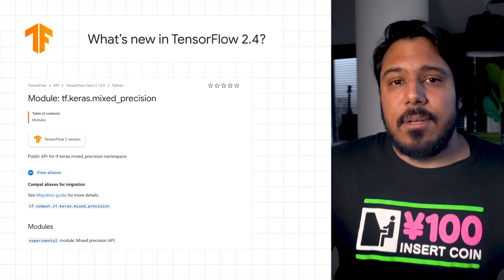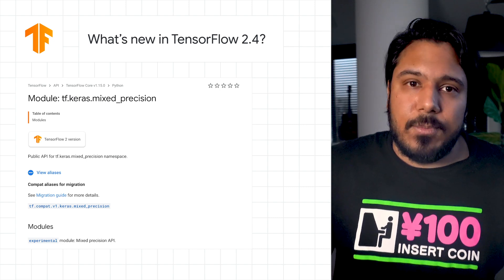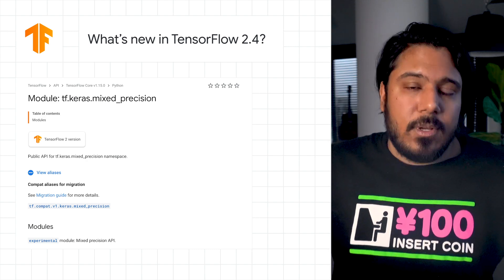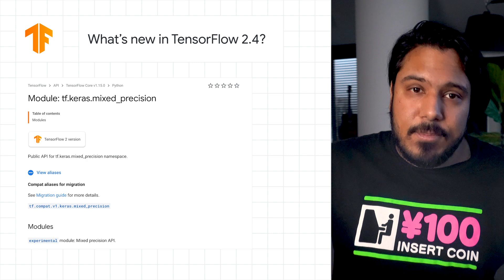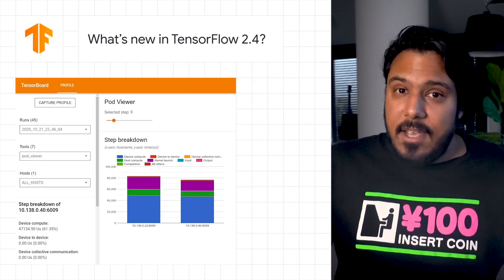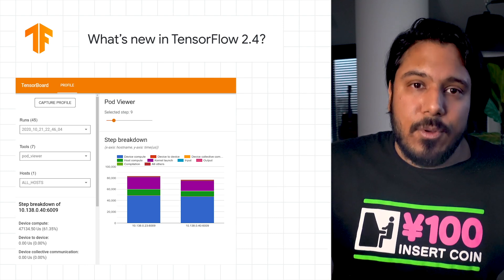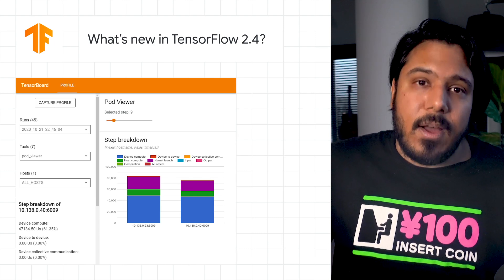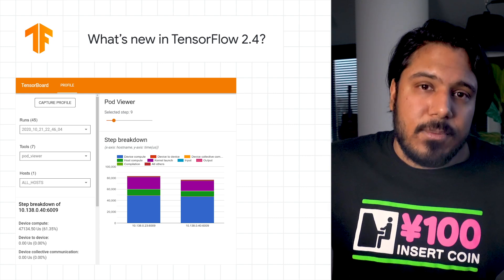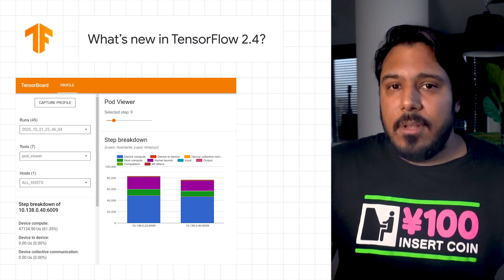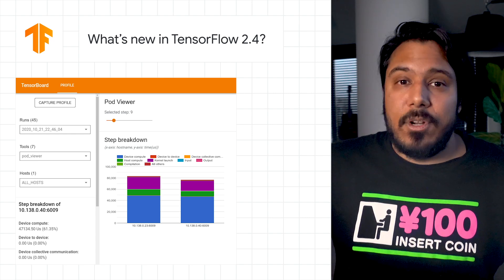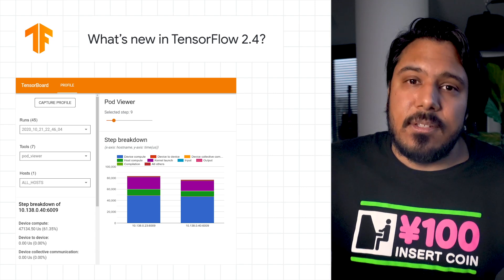enabling anyone using model fit or custom training loops to write training code to work with any optimizer. This release also includes experimental support for a subset of NumPy APIs, enabling you to run NumPy code. TF 2.4 also includes new profiler tools that can profile multi-worker mirrored strategy training jobs, and new features for GPU support to enable the newly available NVIDIA Ampere GPU architecture. For more details on all the new updates in this release, check out the blog post.